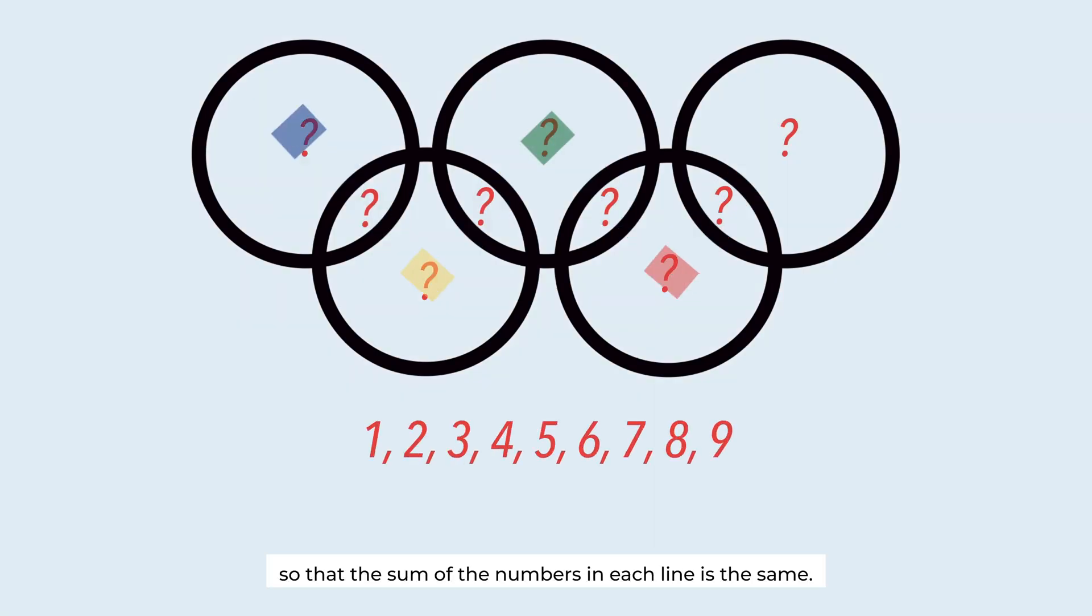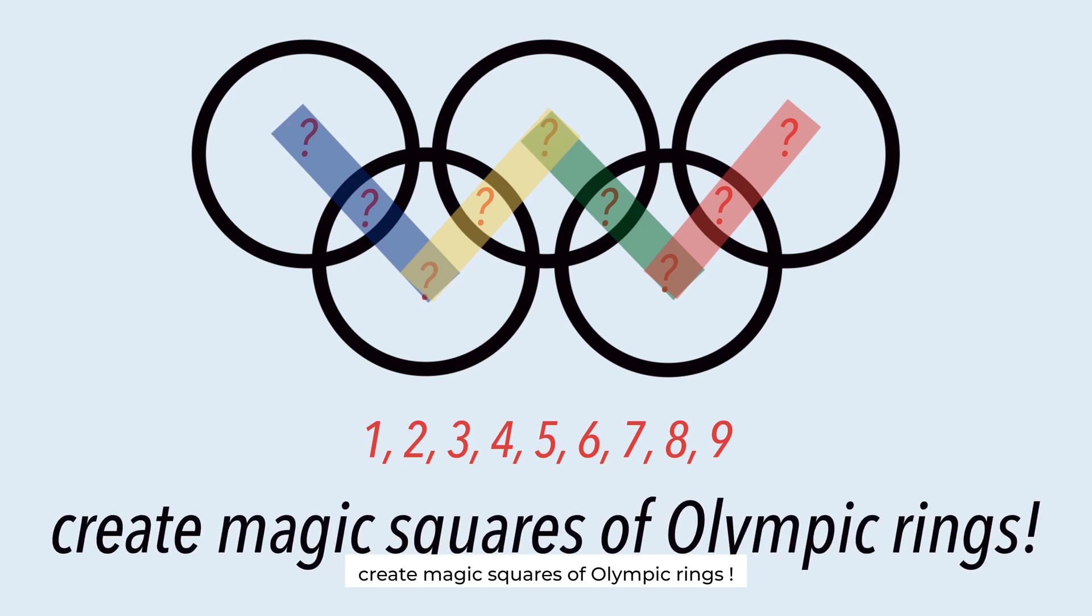Place the numbers from 1 to 9 so that the sum of the numbers in each line is the same. Create magic squares of Olympic rings.